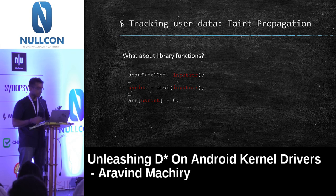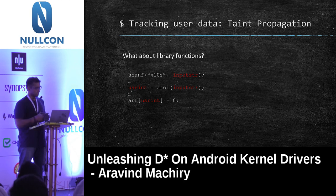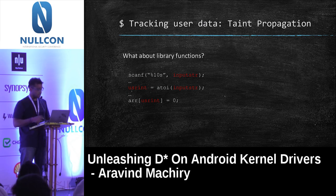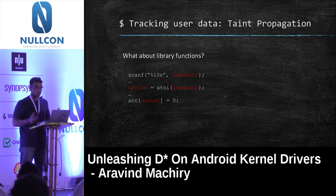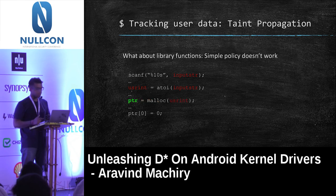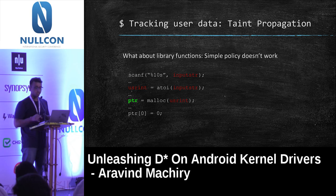There's another complexity — what about library functions? If we convert an input string to an integer using atoi and use that integer as an array index, that's an out-of-bounds access. A simple approach would be: consider any return value of a library function as user-controlled if any argument is user-controlled. But this doesn't always work — for example, with malloc: even if user input is the argument, the returned pointer depends on heap layout and is not fully controlled by the user.